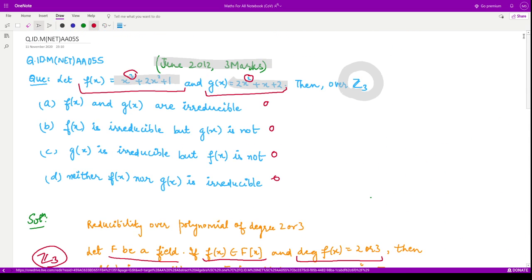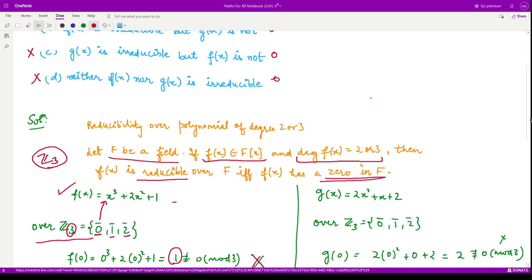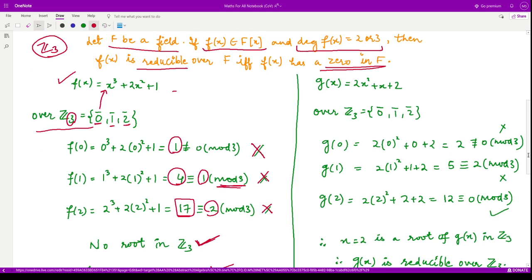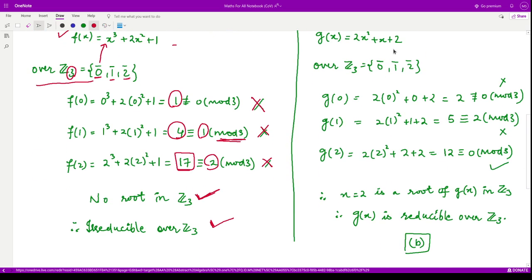So these options are incorrect. They are saying f(x) is not irreducible, so these cannot be the options. Now let us look at the polynomial g(x). It is given to be 2x² + x + 2.